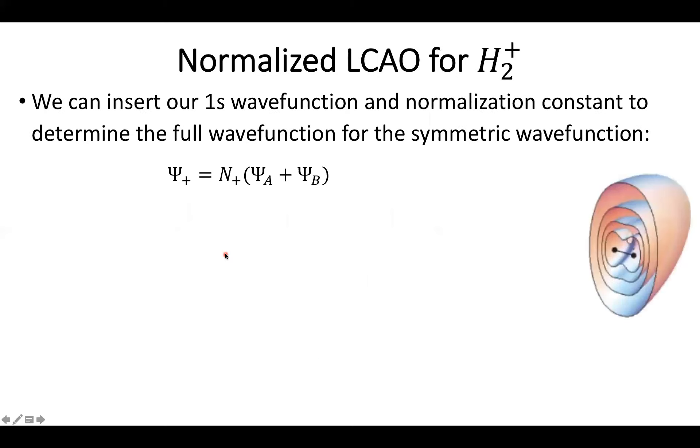So we can then take our new expression for our normalization constant and pair it together with our general form of the wave function. So again, for this symmetric combination of the wave function, I'll have the normalization times my two original atomic orbitals added together. Now let's take a look at what this actually looks like when I put it all together.